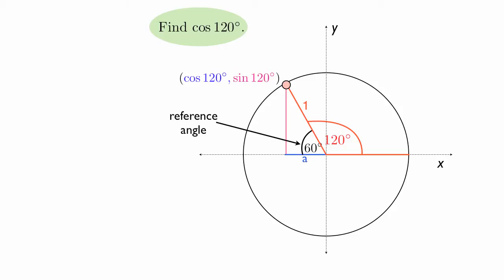It's a reference angle because we're going to see that we need that angle to find out what the cosine of 120 degrees is, and in fact, the cosine of the reference angle is very much related to the cosine of the angle that we're trying to find.